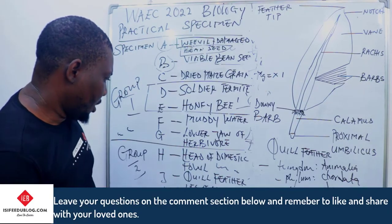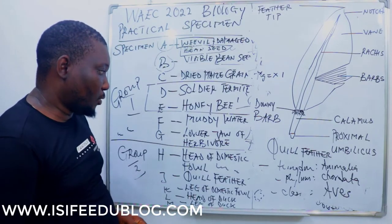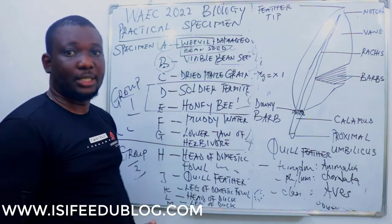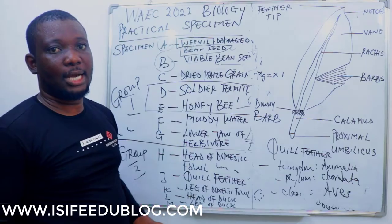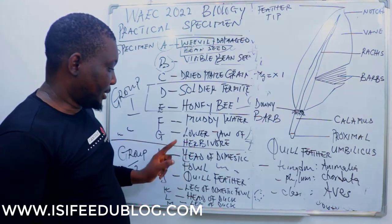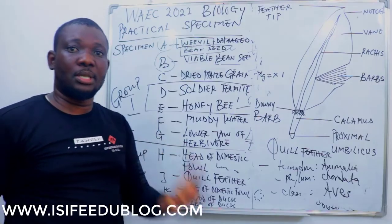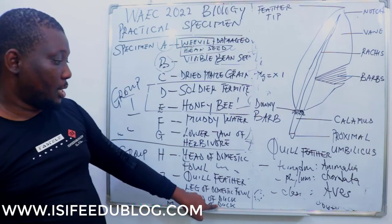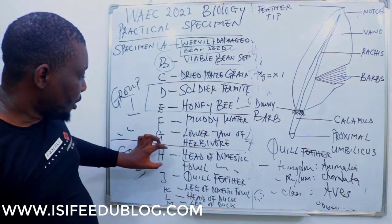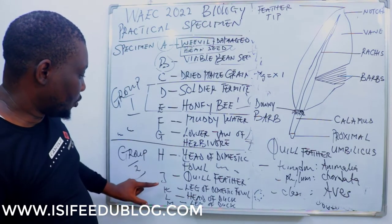Away from specimen J, and before specimen K, let's look at the habitat of specimen H. Specimen H is mostly terrestrial — they are land organisms. But there is one particular organism, which is duck — duck can live both on land and in water, so its habitat is both terrestrial and aquatic.